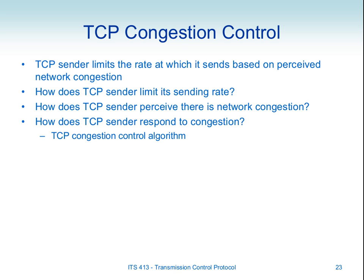We went through what congestion is in the internet, the causes of congestion and the result — the increase in delay and eventually dropped packets, because they cause problems with performance for our applications. So if we have no way to control congestion, eventually our network will fail. TCP has a mechanism for controlling congestion built in, and that's the main form of congestion control in the internet today.